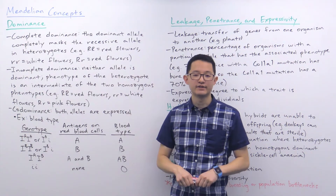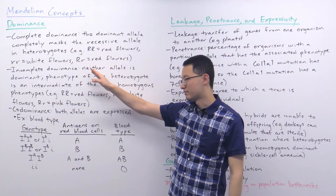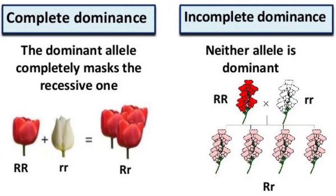Starting with dominance, there are three different types you need to know for the MCAT: complete dominance, incomplete dominance, and co-dominance. Complete dominance is the simple Mendelian dominance where the dominant allele completely masks the effects of the recessive allele in heterozygotes. For example, homozygous dominant big R big R plants have red flowers, homozygous recessive little r little r plants have white flowers, and heterozygous big R little r plants also have red flowers — the recessive allele is masked.